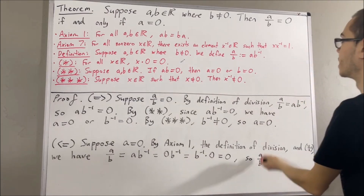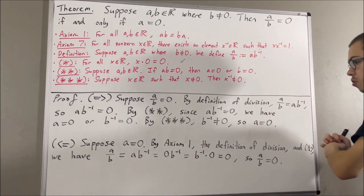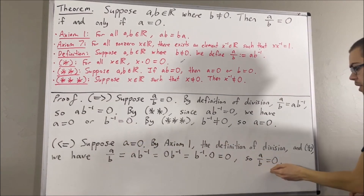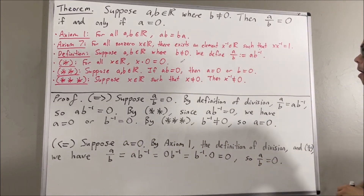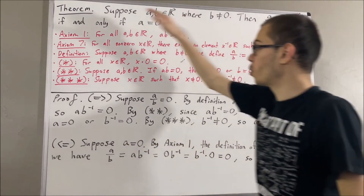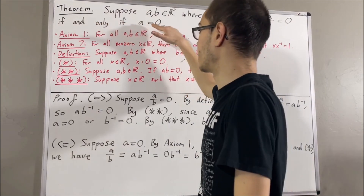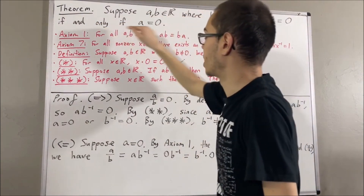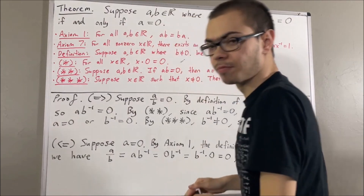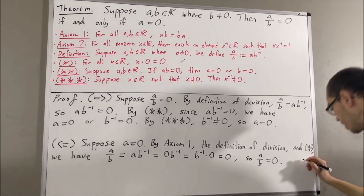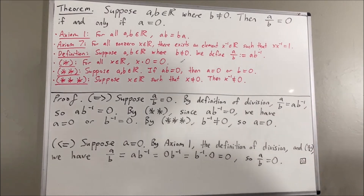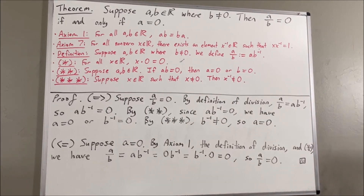And that is exactly what we wanted to show. So we have shown if a is equal to 0, then a over b is equal to 0. We have proven both directions of this statement, which means we have proven the entire statement. And so, this completes the proof. That's pretty much it for this video.